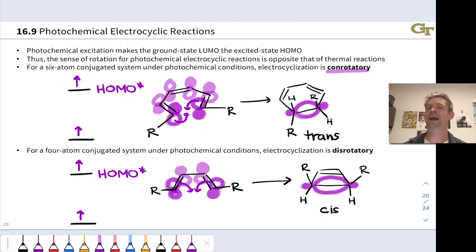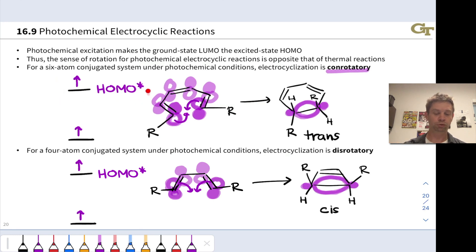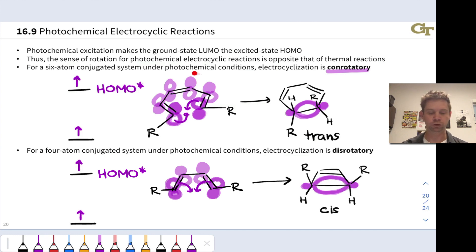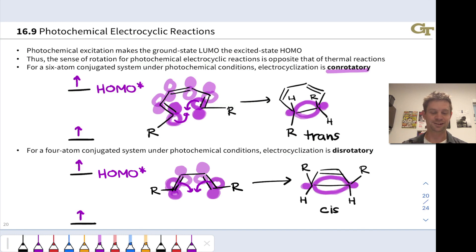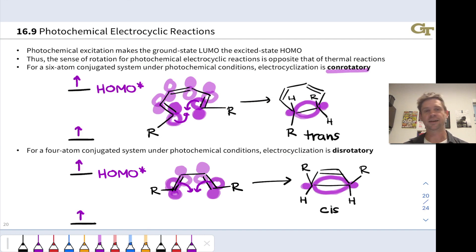Under photochemical conditions, we get a toggle. Photochemical 6-pi cyclization is a conrotatory process. Photoexcitation converts the former LUMO into the HOMO — the HOMO* — which now needs to transform into the sigma bonding orbital. The HOMO* for hexatriene has the same shape as the LUMO of the ground state, and this leads to a conrotatory situation with both lobes rotating clockwise to create constructive overlap. Starting from the trans-trans alkene, this leads to the trans product, with one R group rotating down and the other rotating upward.